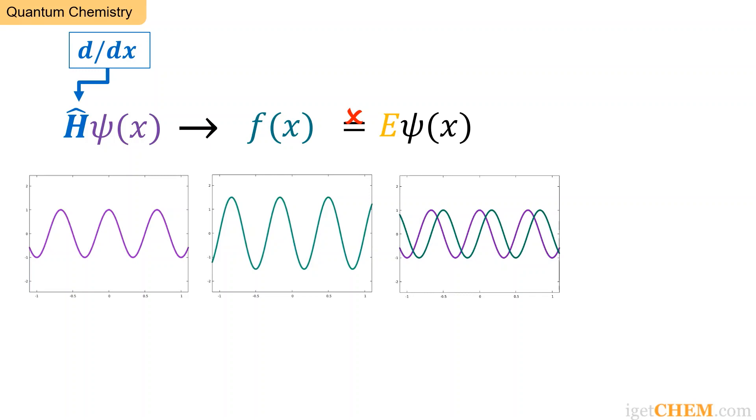So we see in general, some operator operated on some function psi will usually not give back the same function. So what does it mean to solve the Schrödinger equation?